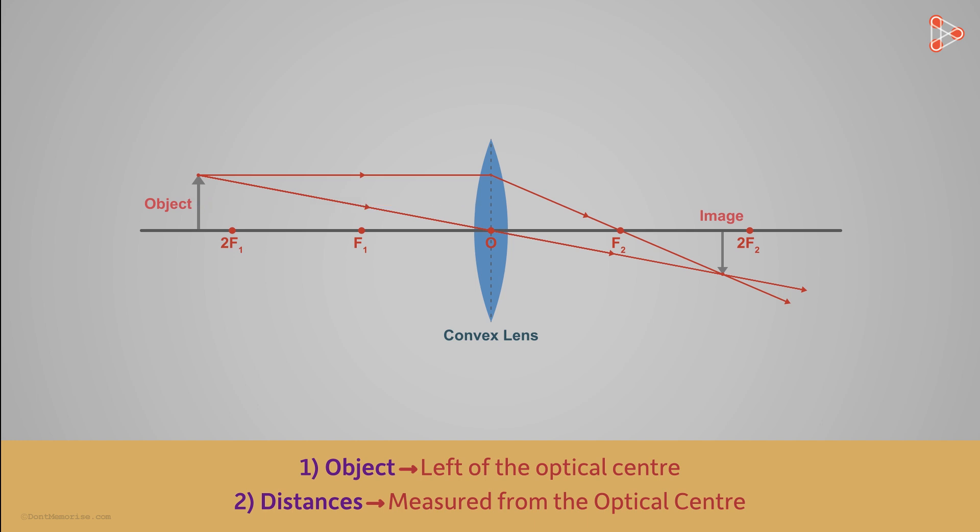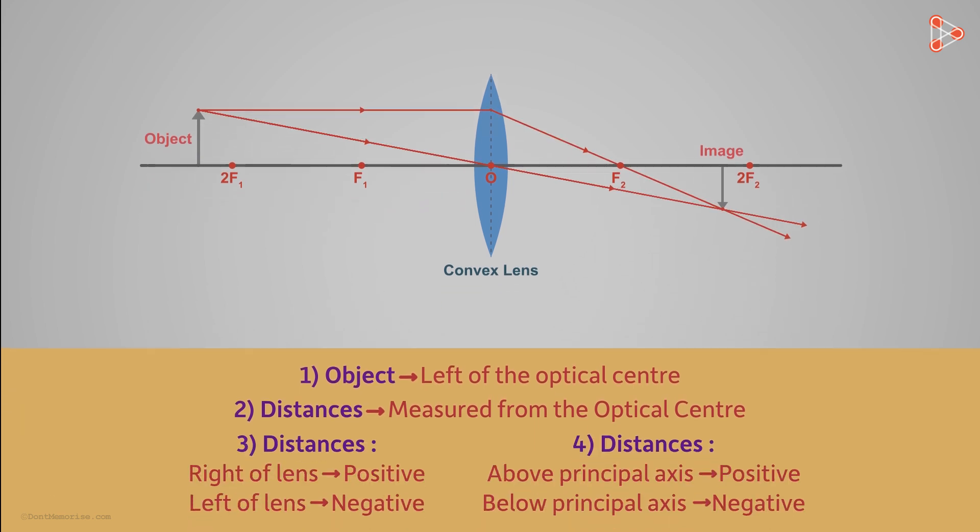The third and the fourth conventions are easy. Here they are. I am sure they are self-explanatory. What is that we measure above and below the principal axis? Yes, the heights of the object and the image.